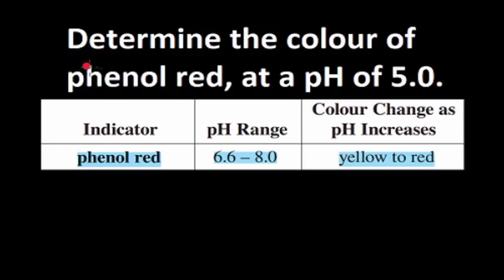Let's do this next one. Determine the color of phenol red at a pH of 5.0. This is the information we have. The pH range of our indicator is 6.6 to 8.0, and the color change as pH increases is yellow to red.